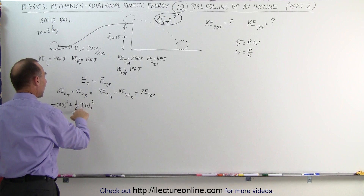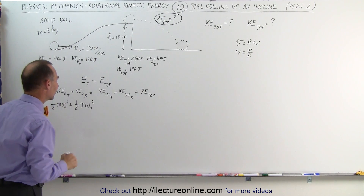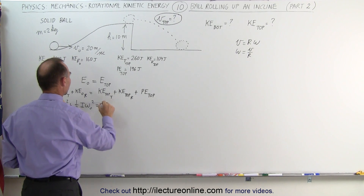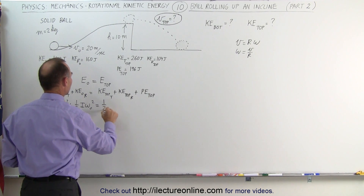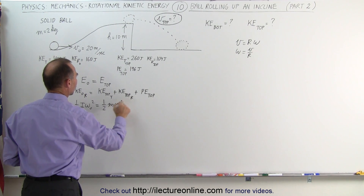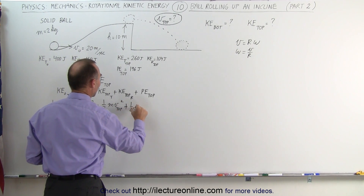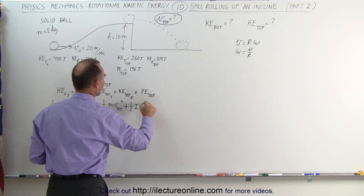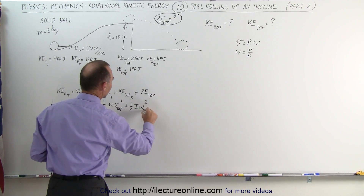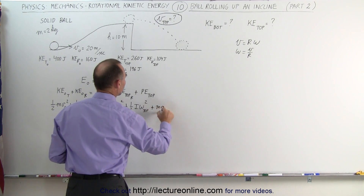For rotational kinetic energy we use I, the moment of inertia, and omega, the angular velocity. This equals the translational kinetic energy at the top, which is one-half mv-top squared — what we're looking for — plus one-half I omega-top squared, plus mgh.